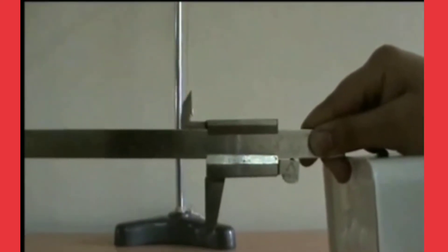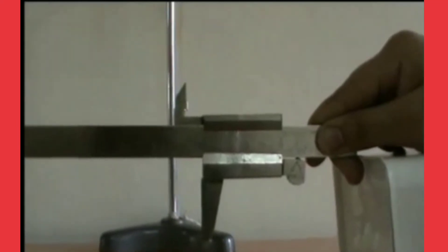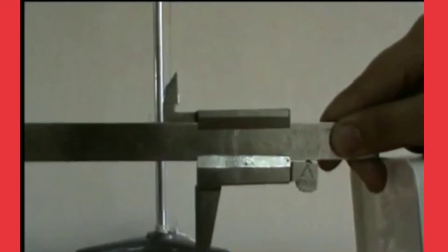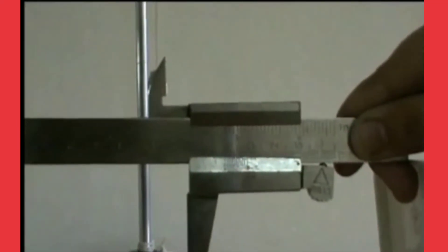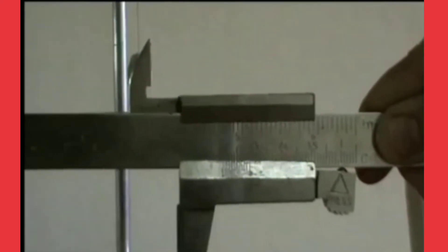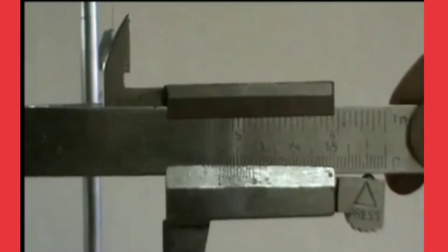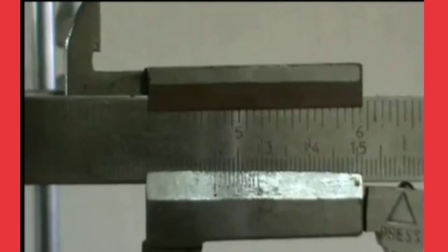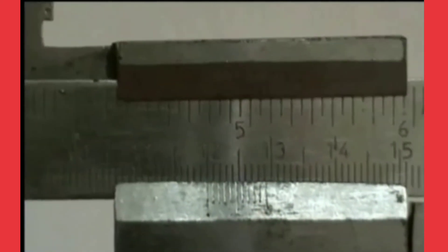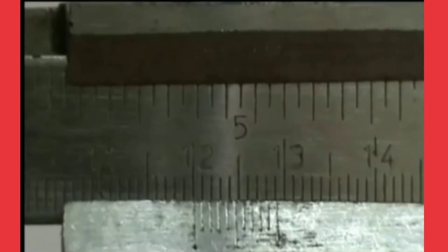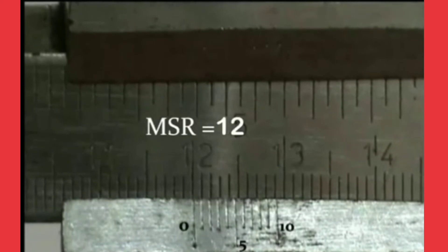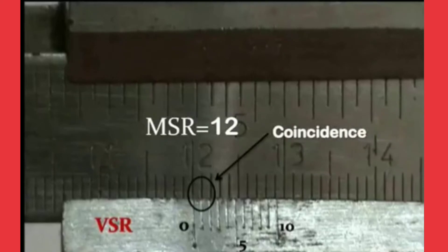Take the main scale reading from the vernier calipers. If you see here, main scale reading is 12. Another reading also we need to take, that is vernier coincidence. Here the first line in the vernier scale is directly coinciding with the main scale, that's why vernier coincidence is 1. We need to note down those values in the given tabular form.